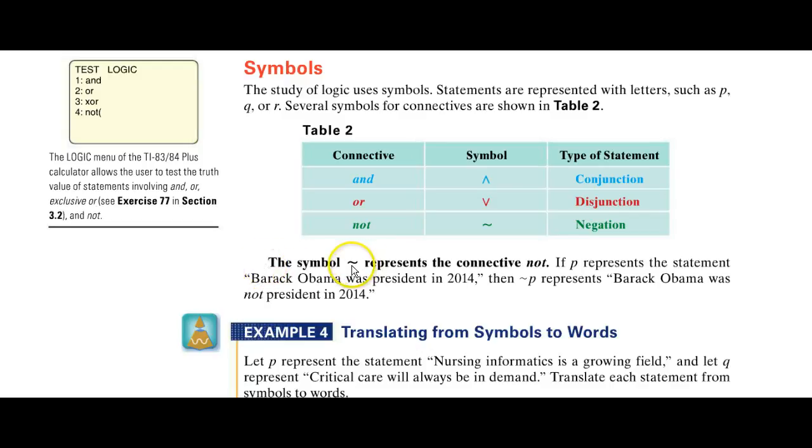The symbol negation represents the connective 'not.' If P represents the statement 'Barack Obama was president in 2014,' then the negation of P represents 'Barack Obama was not president in 2014.' Let's get some practice.